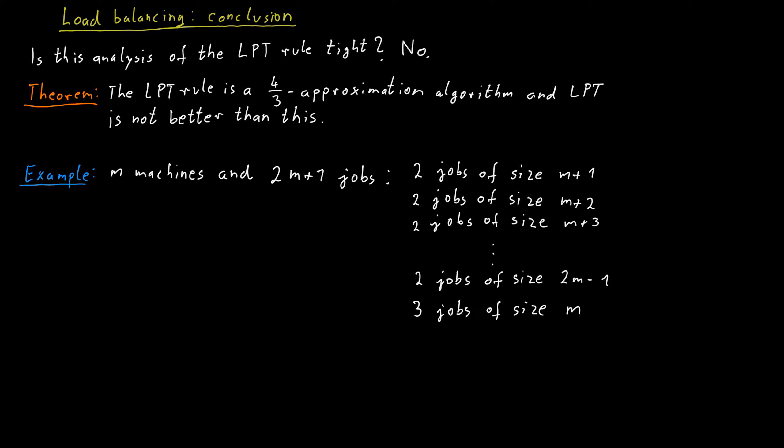I will leave it as an exercise to find out what the LPT rule will do on such an instance and what the optimal allocation of jobs to machines would be and then what the ratio of the produced makespans is.